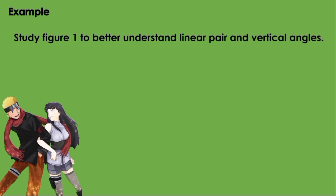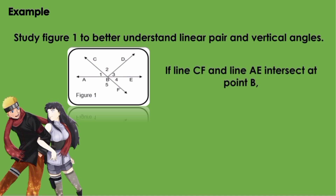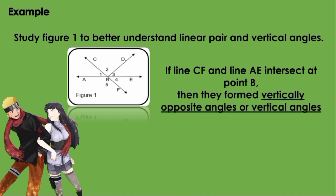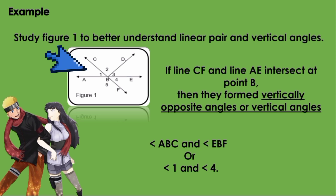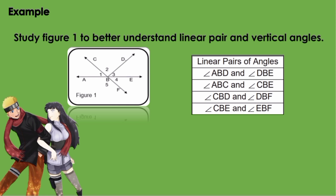Study figure 1 to better understand linear pair and vertical angles. If line CF and line AE intersect at point B, then they form vertically opposite angles or vertical angles — that is, angle ABC and angle EBF, or angle 1 and angle 4. Using the same figure, we can create linear pairs of angles: angle ABD and angle DBE, angle ABC and angle CBE, angle CBD and angle DBF, and angle CBE and angle EBF.